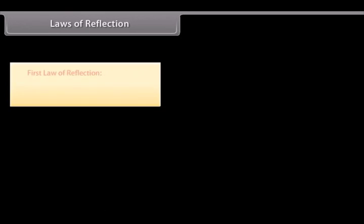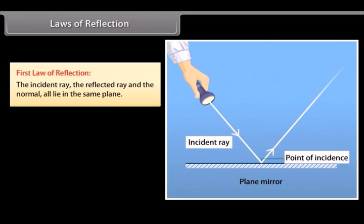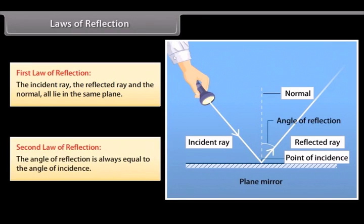Laws of reflection. First law of reflection: the incident ray, the reflected ray, and the normal all lie in the same plane. Second law of reflection: the angle of reflection is always equal to the angle of incidence.